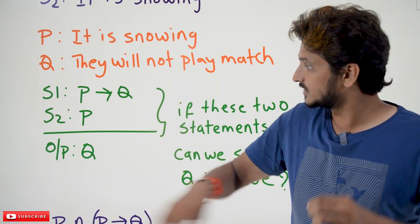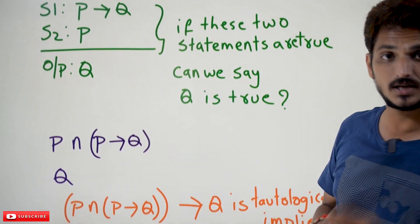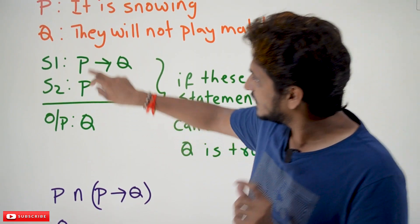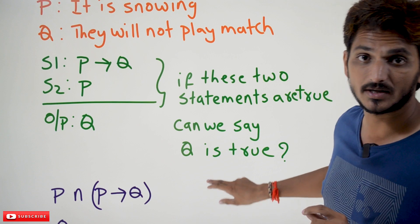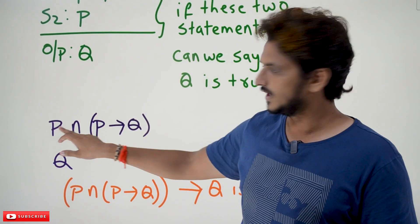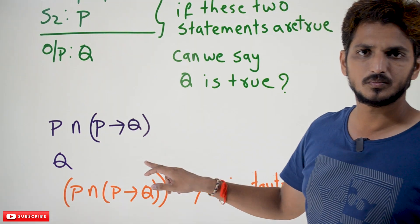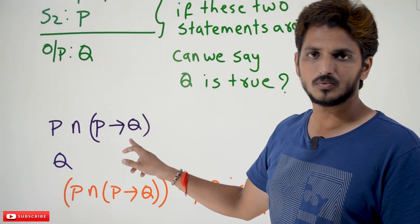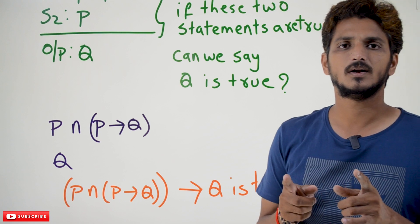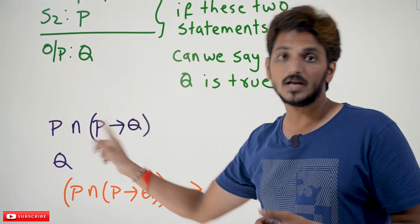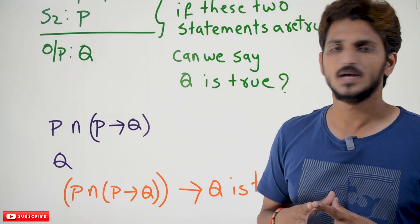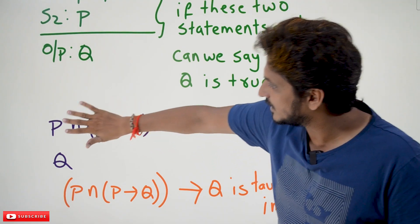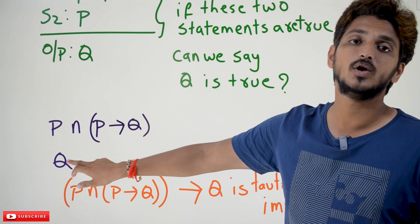The other way to understand inference rules relates to what we clearly discussed in our last class about tautological implication. Someone has said that these two statements are true — this can be written as P conjunction (P implies Q). This entire statement is going to be true because both parts are true, and conjunction is true only when both are true. So if P conjunction (P implies Q) is true, then you can say that Q is going to be true.